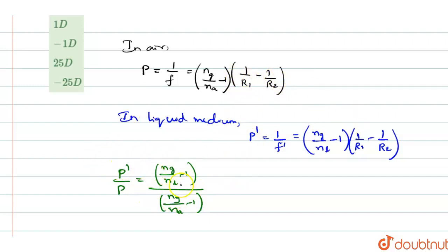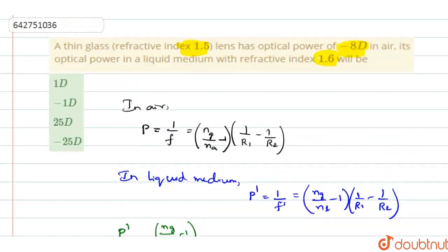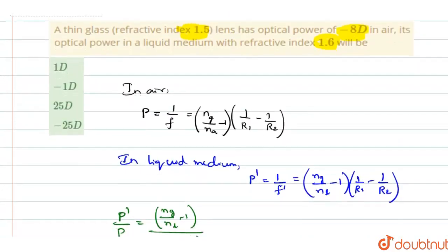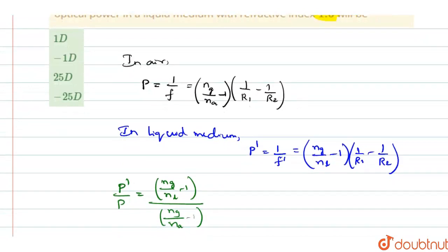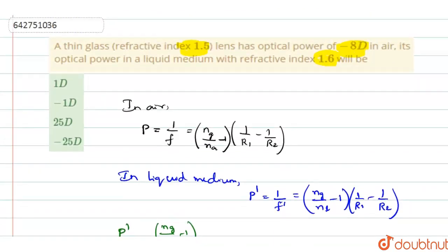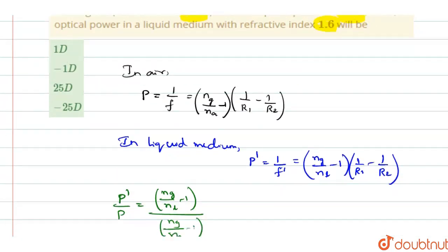Now, after this, when you substitute, when you go on substituting it, you have the refractive index of both the mediums and with respect to air, the refractive index, you know it as 1. So, substituting all the values, you will get the power value P dash.